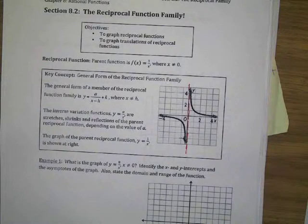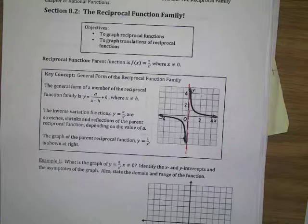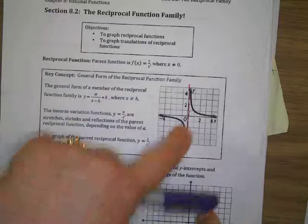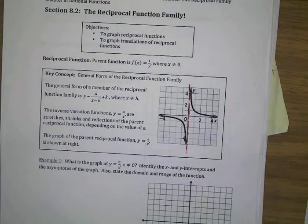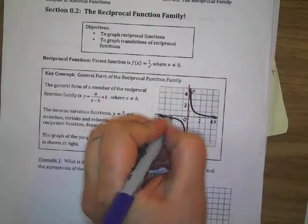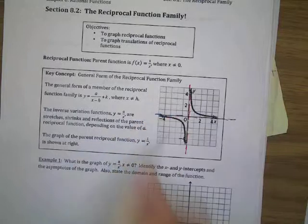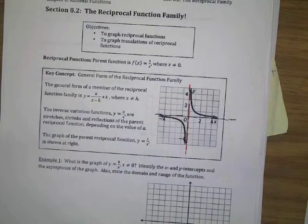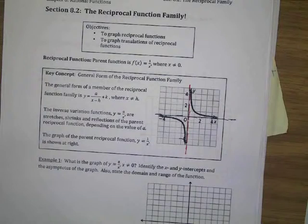So when x equals 0, when it says x is not allowed to be 0, that's making this right here, this vertical asymptote. We're not allowed to cross it. Does our graph touch it ever? No, it gets really close to it, but it's not going to ever touch it. Those are asymptotes. That's the vertical asymptote when x equals 0. We have another asymptote.